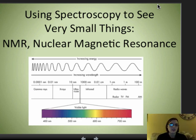Hi guys, welcome to the video on spectroscopy. In this series of videos, we're going to talk about what spectroscopy is and about the different types of spectroscopy, and spectroscopy is just a way to use light and other sources of electromagnetic radiation to see very small things.